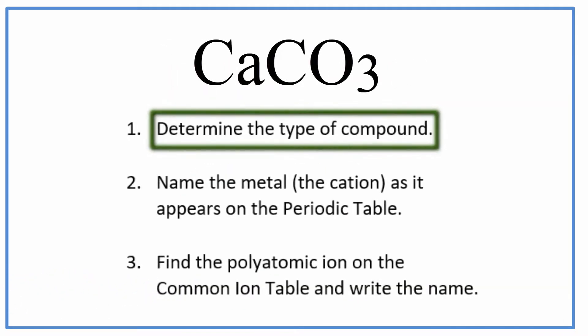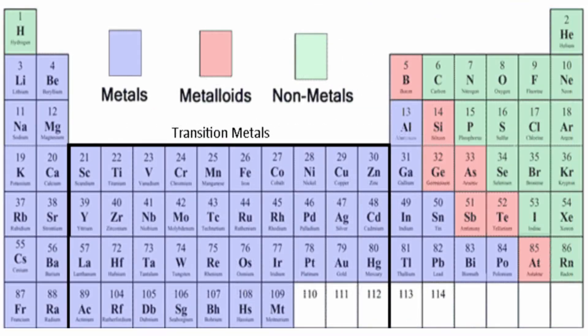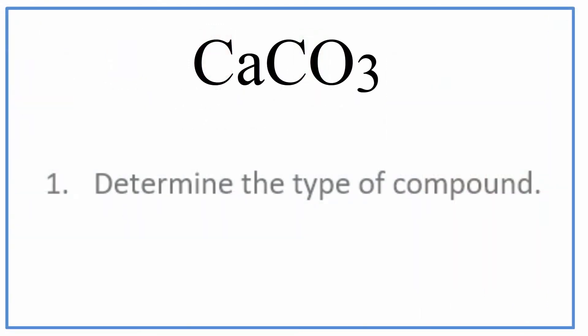First, we need to make sure we know the type of compound. On the periodic table we can see that Ca is a metal, and then that CO3 we can recognize as a group of nonmetals, a polyatomic ion, and that makes this a ternary ionic compound.